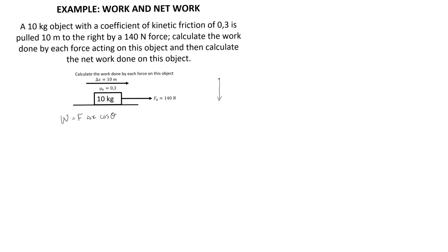The free body diagram shows that there is a force of gravity acting downward on this object — the force of gravity being the product of the object's mass and the gravitational acceleration of 9.8. Since the normal force is the only force acting vertically upwards, it will be equal but opposite to the gravitational force. We can also see there is an applied force of 140 newtons and a frictional force acting on this object.